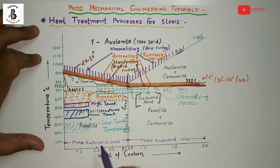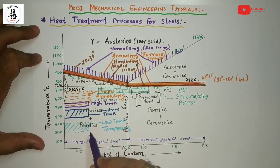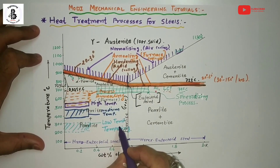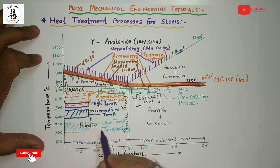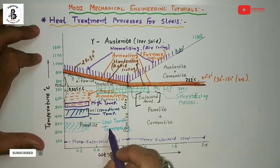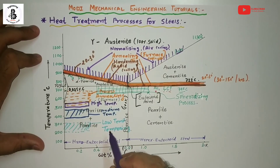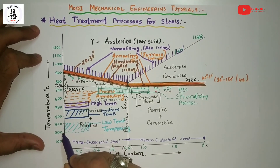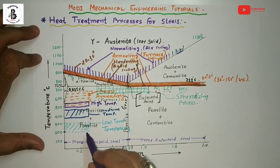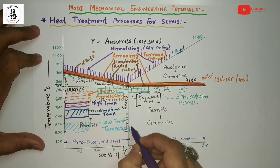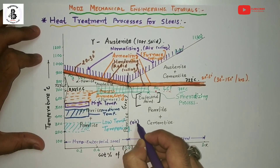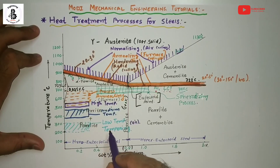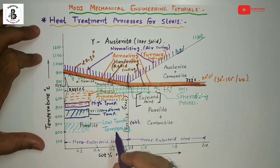If there is only a little bit of change required in the quenched structure, you will follow the low temperature tempering process. In the low temperature tempering process, the quenched or hardened structure is once again heated above 200°C, and then it will be given an oil quench. You will get a better structure than from the water quenching process.